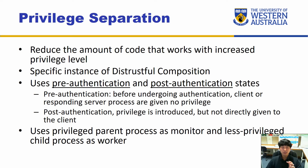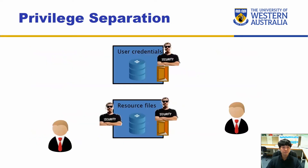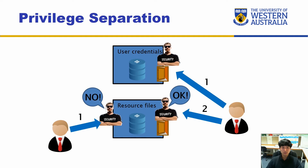Privilege separation is part of distrustful composition — what it does is access a resource in order to gain the privilege to access another resource. It typically has pre-authentication and post-authentication states. For example, if a user tries to access a resource directly, it gets rejected because they haven't gained the privilege. So the user first validates their credentials and authenticates, and once done, they are granted the privilege to access the resource files.